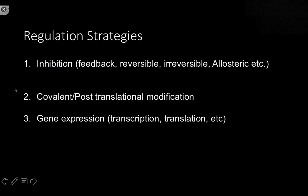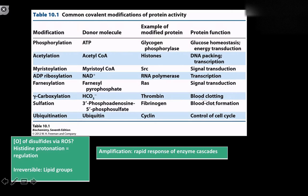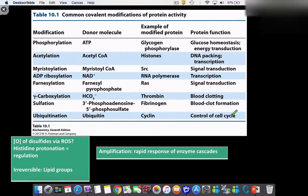What most of this video is going to be about is covalent modifications, or sometimes called post-translational modification. And then obviously in genetics, you learned about how transcription and translation can control the amount of enzyme present in the cell. The first of these, and really the most important in my opinion, is phosphorylation.